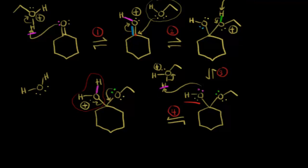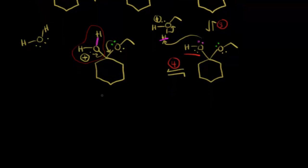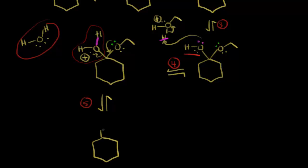If these electrons in green moved in here to reform the double bond, that would kick these electrons off onto the oxygen and we would have water. This is the dehydration portion — so we're going to form water. This would be step five: we're going to lose H2O, the dehydration step. We would be left with our ring, and this time a double bond to this oxygen with an ethyl coming off of that oxygen. There's still a lone pair of electrons on this oxygen with a plus one formal charge. If you drew a resonance structure for this, you would actually have this carbon as being very electrophilic.